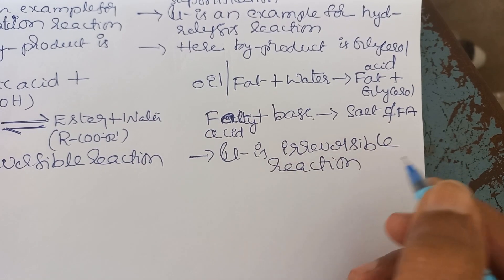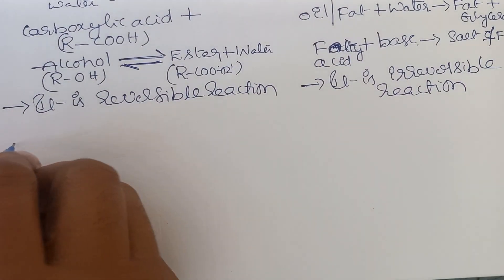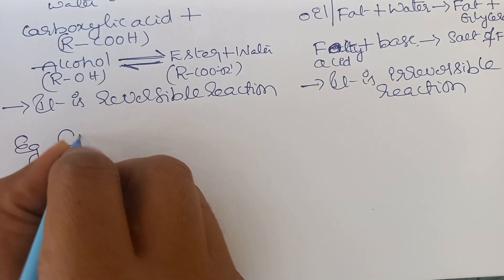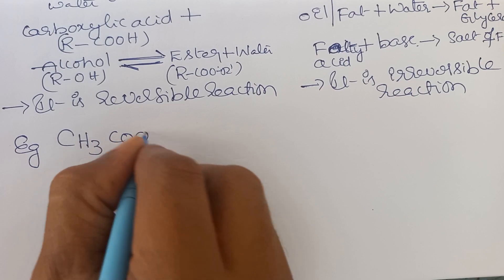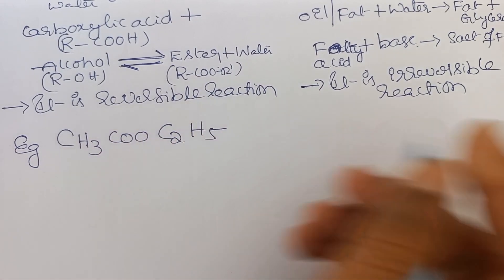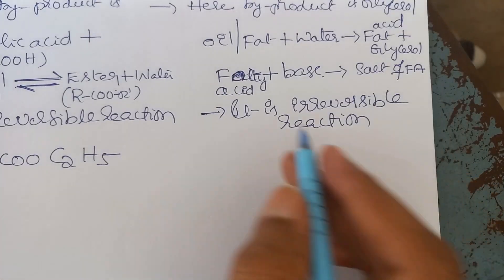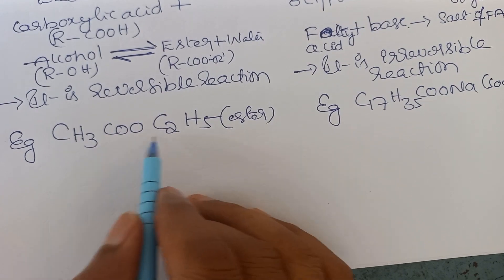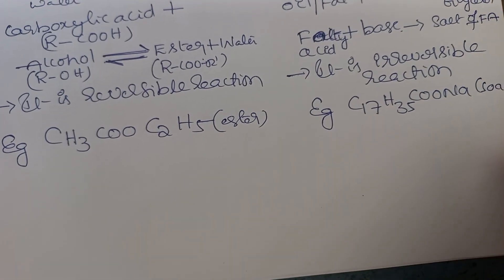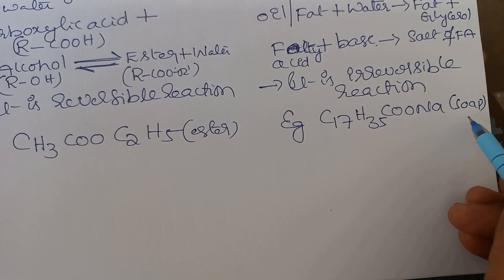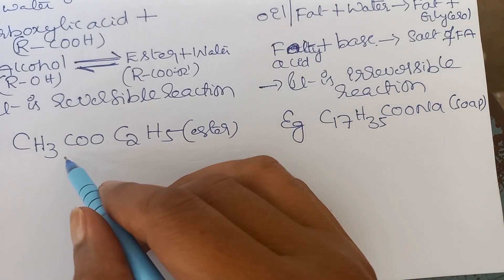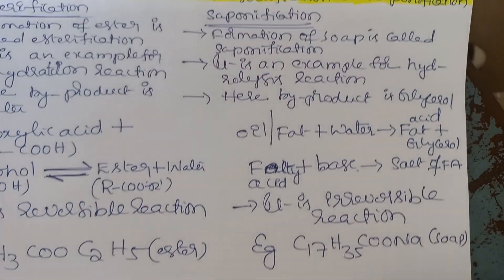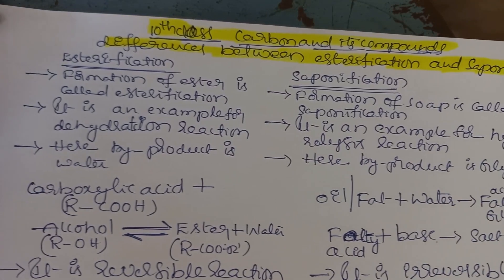An example of an ester is CH3COOC2H5, which is ethyl methyl ester. An example of soap is C17H35COONa, which is sodium stearate. These are the key differences between esterification and saponification — an important four-mark question.